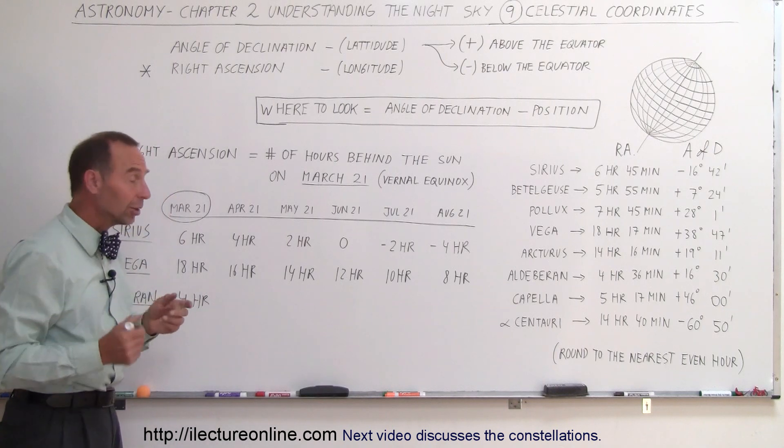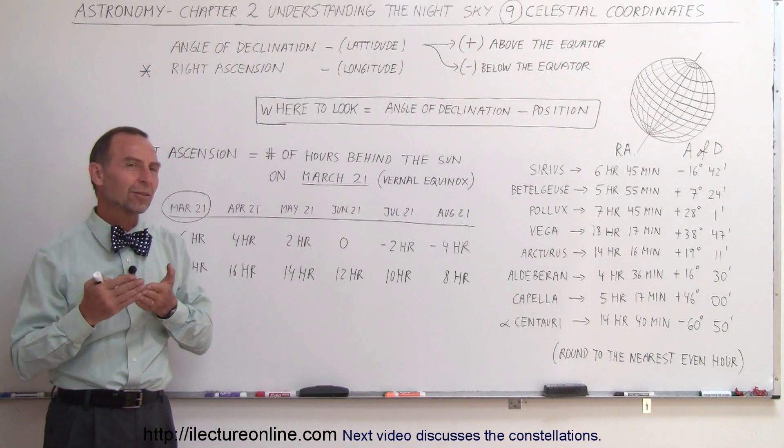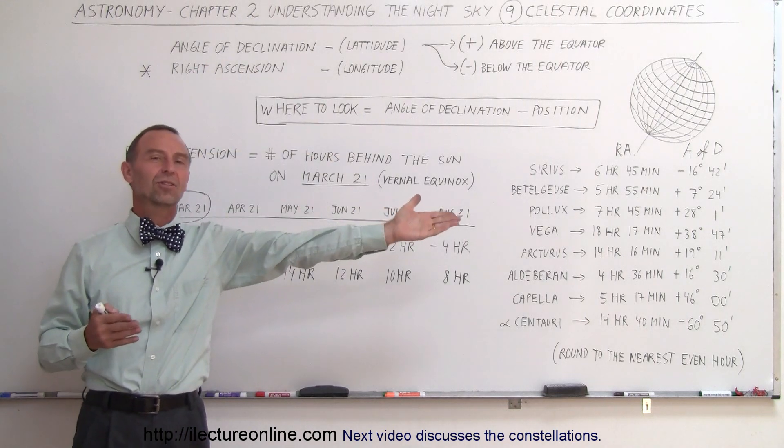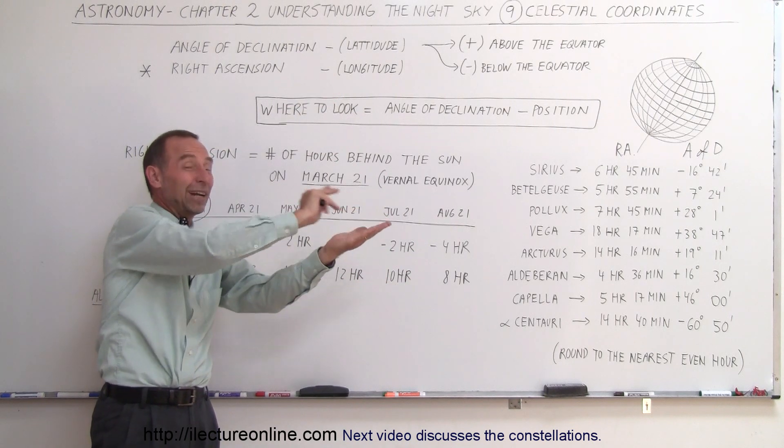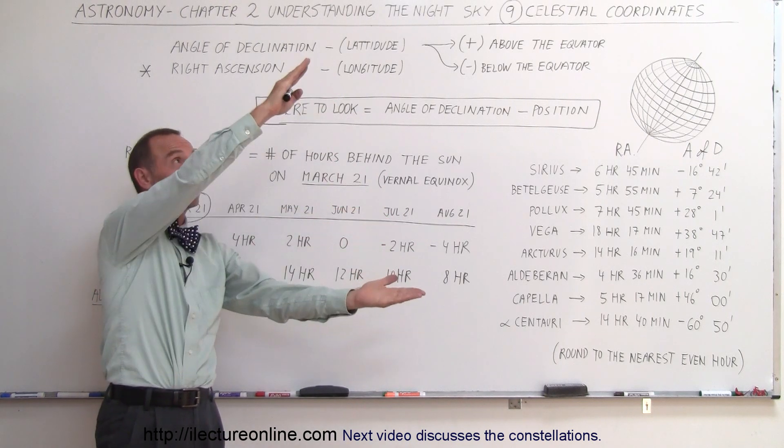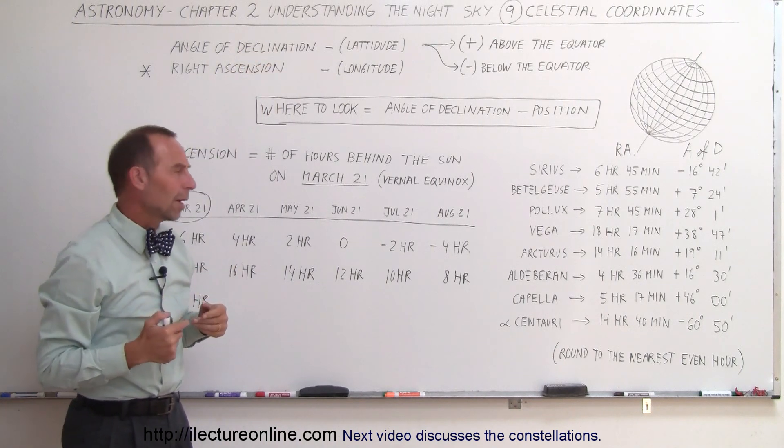It is 4 hours behind. So, if we want to go look at Aldebaran, on March the 21st, where do I look? Well, since it's 4 hours behind the Sun, when the Sun sets, let's say at 6 o'clock in the evening, it will be 4 hours behind, 4 hours, for every 2 hours, it's 30 degrees, so it's about 60 degrees, so I can be looking, kind of towards the West, in that direction, and I could see Aldebaran.